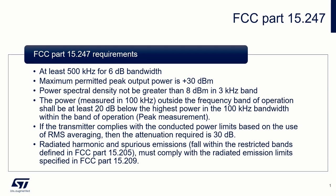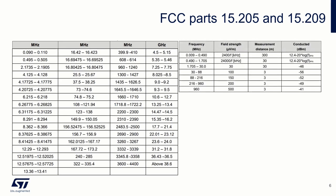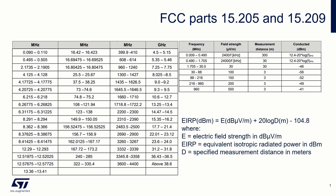No matter if based on an RF conducted or a radiated measurement in peak mode. If the transmitter complies with the conducted power limits based on the use of RMS averaging over a time interval, the required attenuation shall be 30 dB instead of 20 dB. Attenuation below the general limits specified in 15.209 is not required, but radiated harmonics and spurious emissions of devices complying with Part 15.247 which fall within the restricted bands as defined in FCC Part 15.209 must also comply with the radiated emission limits specified in FCC Part 15.209.